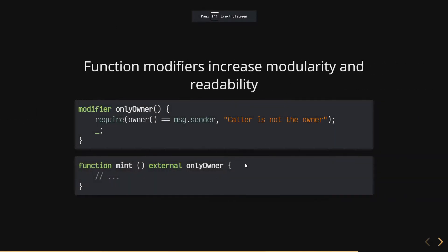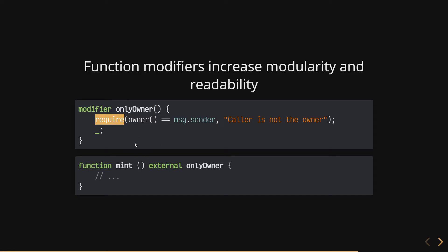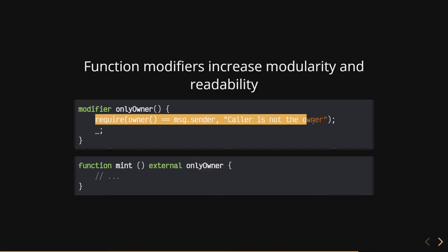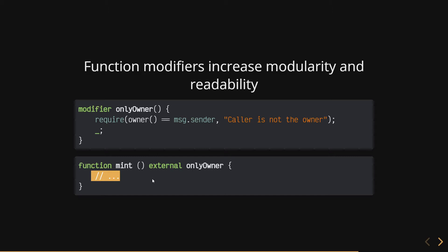Now let's talk about function modifiers. Someone called out the `onlyOwner` modifier last week — it's probably the most popular modifier for smart contracts. Modifiers work like a wrapper around a function. That wrapper can contain a `require` statement to modify the function's behavior. For example, if we have a `mint` function and only want the owner to call it, we add `onlyOwner` and it inserts that check before the function body runs. If the require fails, mint never executes.